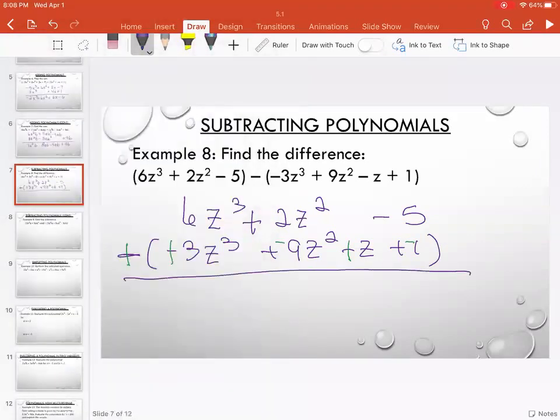Now I'm adding. 6 plus 3 is 9. 2 plus a negative 9 is negative 7. There's nothing to go with the positive z. And negative 5 plus negative 1 is negative 6.